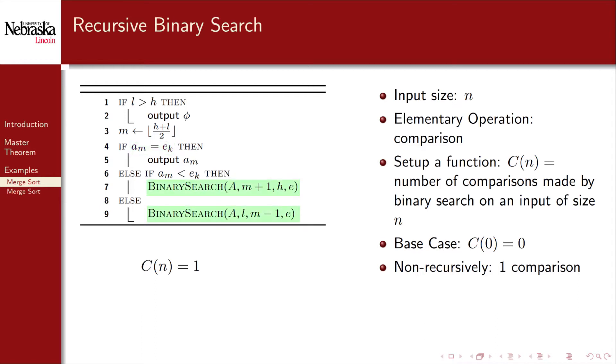However, we also make recursive calls on lines 7 and 9. However, at most, one of these calls is made. Further, the input size of the recursive call is roughly half since binary search cuts the array in half each call.